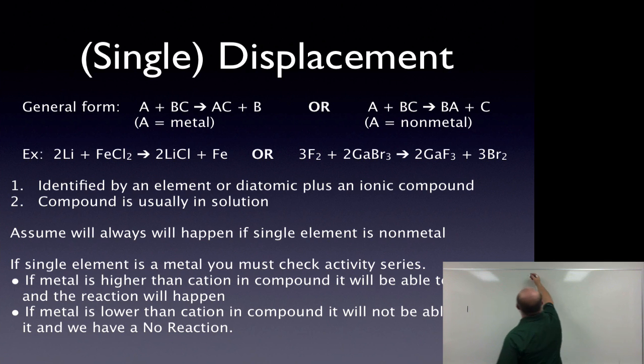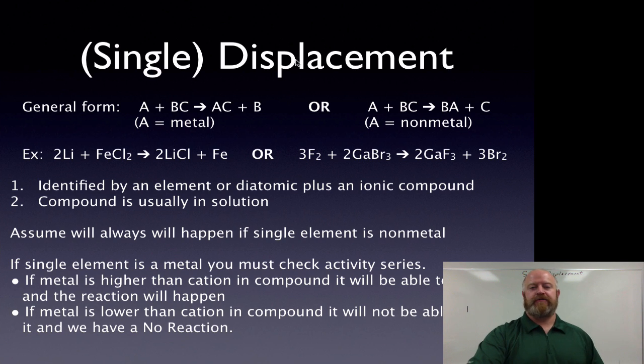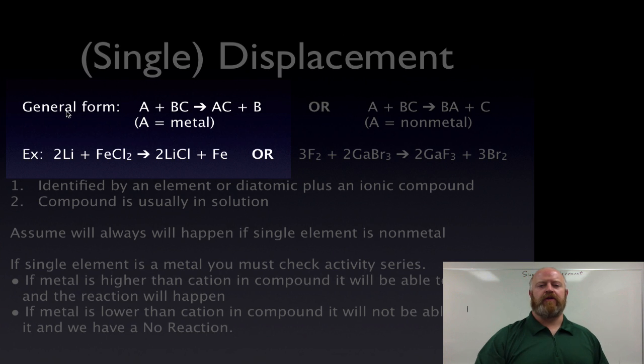So for single displacement reactions, what we have to look at is what is going to happen when those two things intermix with each other. We have two options. So if we go back to our slide here, here's our general form. If substance A is a metal, when A reacts, and we're going to call it BC now because we have three different elements present here.